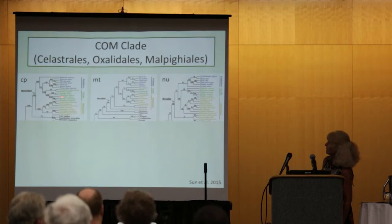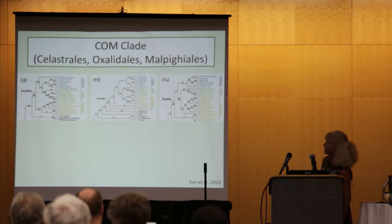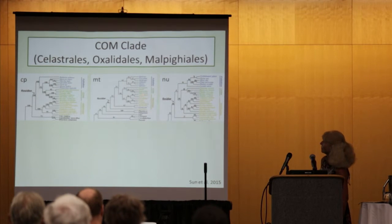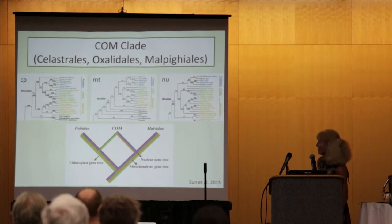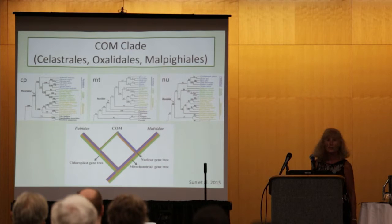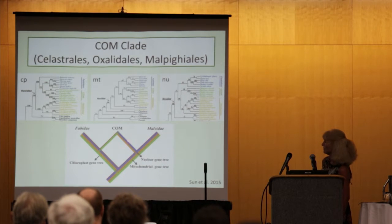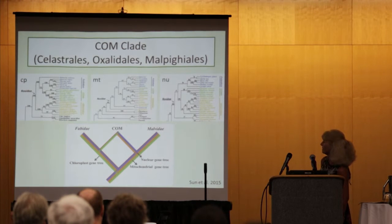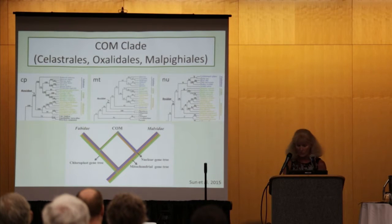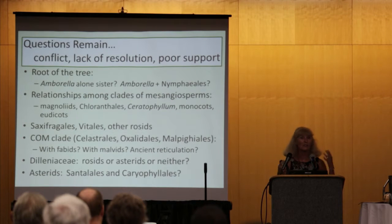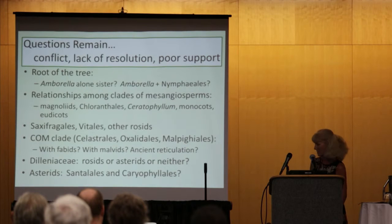This illustrates the situation where we have COM plus the fabi clade with plastid data, and COM plus Malvids with mitochondrial data and also with nuclear data. One hypothesis to explain this is that there may have been some ancestral reticulation that yielded the COM clade itself, where plastid data were contributed by the fabi clade and mitochondrial and the majority of nuclear genes from the Malvids ancestor. The 1KP dataset with its vast number of nuclear genes may have something to say about that.